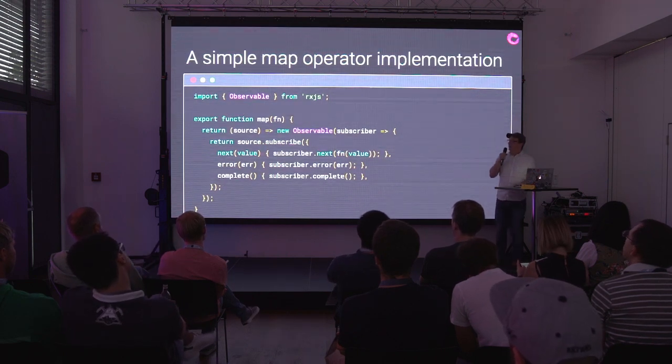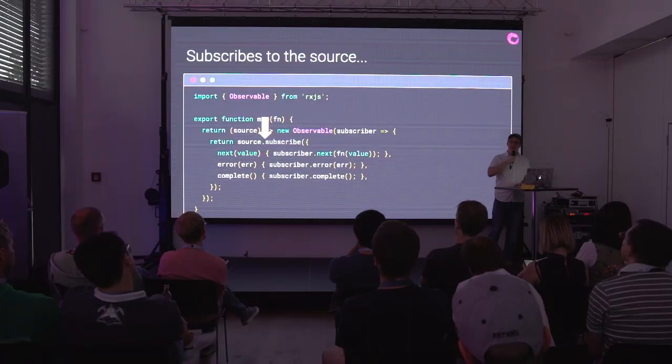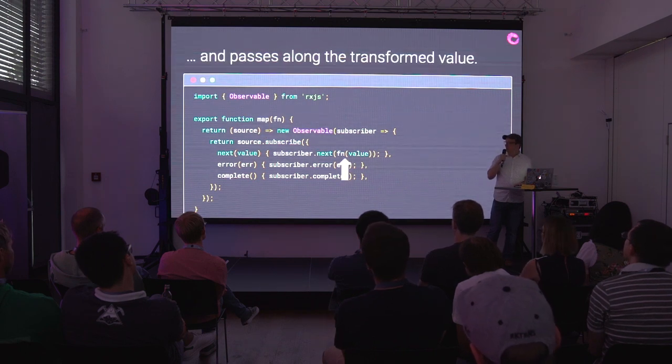An operator, if you're going to implement one yourself, looks like this: a higher-order function that returns a function that takes an observable and returns an observable. When you subscribe to the return observable, it subscribes to the source observable. In this case, we've passed a mapping function in, and every time we get a value, we call the mapping function on it and pass the return value to the next step.